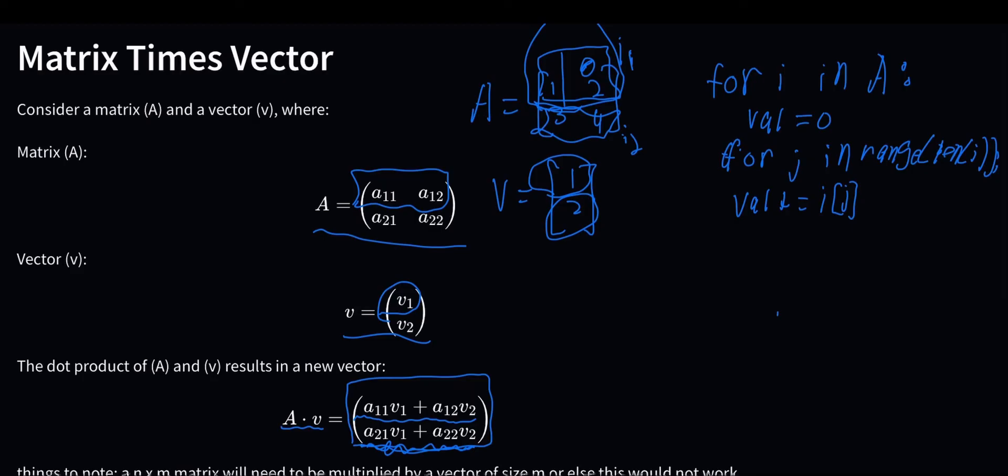So first value would be one, and then we would multiply that with the first value of the vector, which is right here, which would be v sub j, assuming v looks something like this, one comma two.